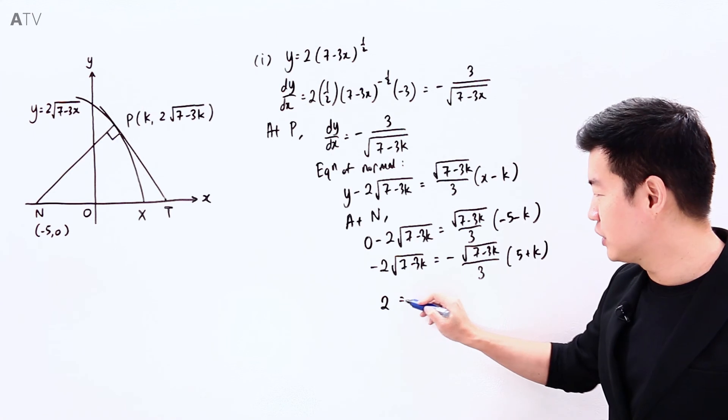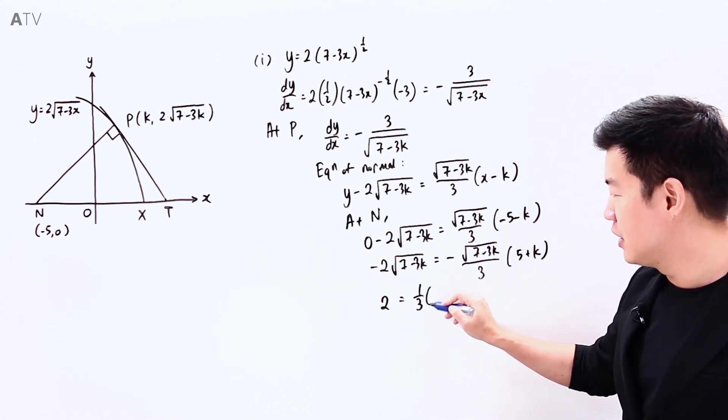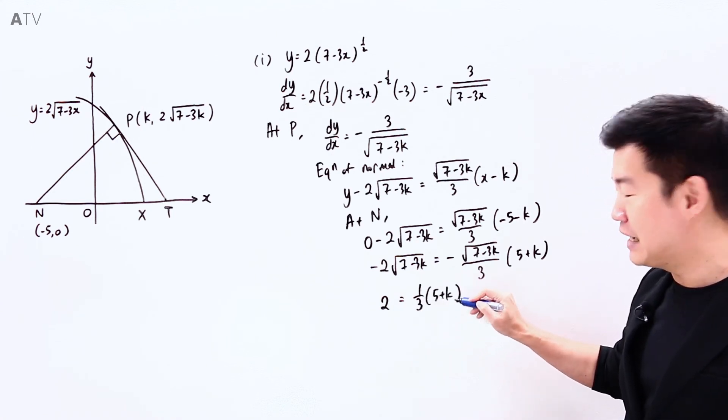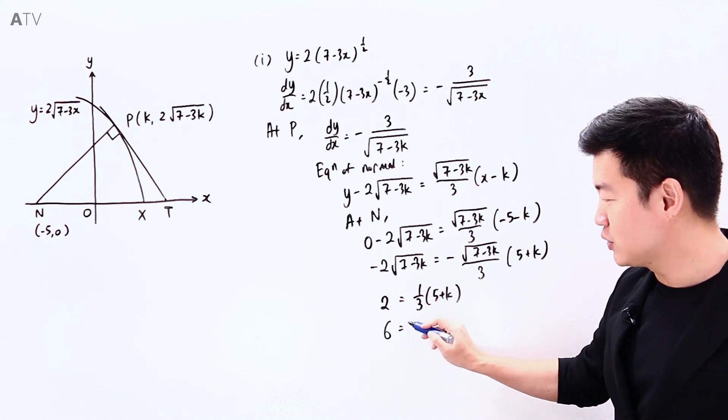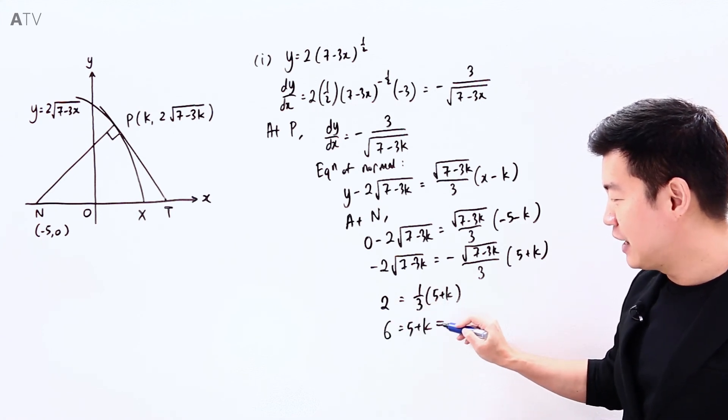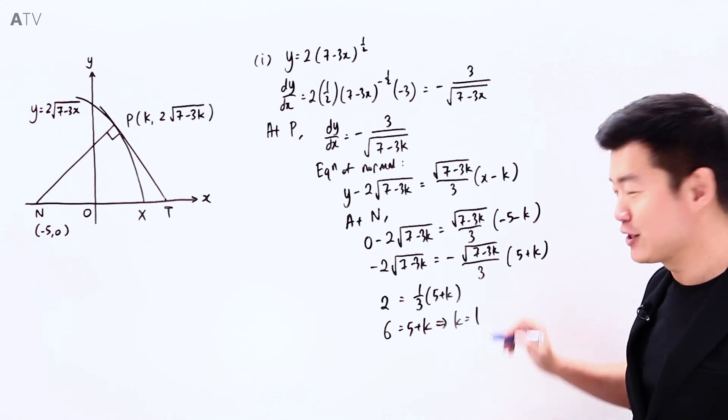So on the left hand side we will have 2. On the right hand side, I have 1 over 3 of (5 plus k). A simple equation. So 3, I multiply across to the other side, and hence we show that k is equal to 1.